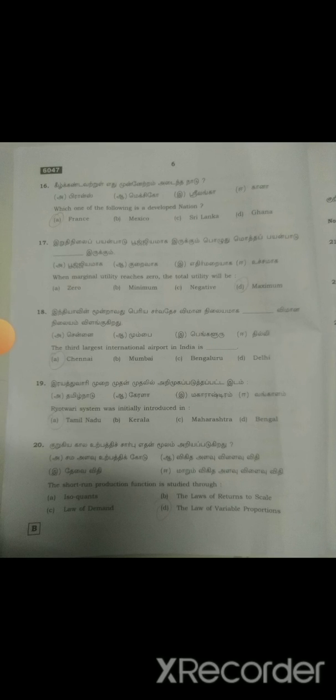Sixteenth one: Which one of the following is a developed nation? Option A, France. Seventeenth one: When marginal utility reaches zero, the total utility will be Option D, maximum. Eighteenth one: The third largest international airport in India is Option A, Chennai.